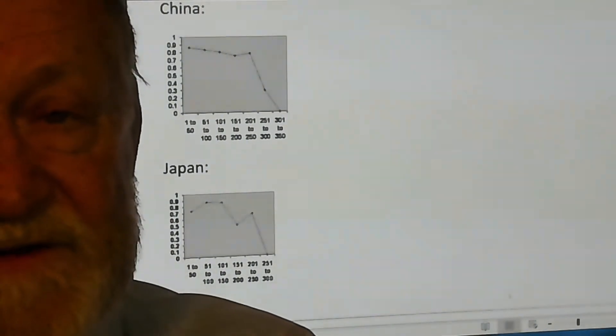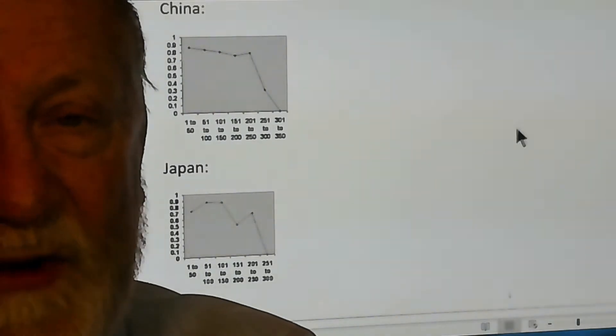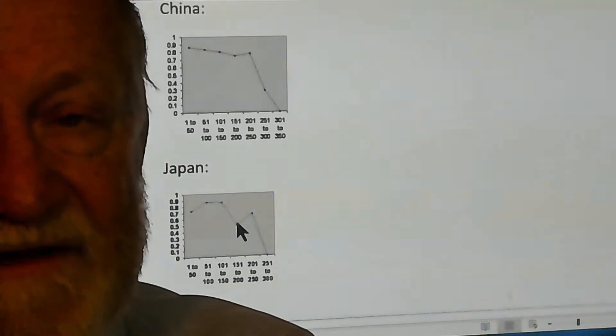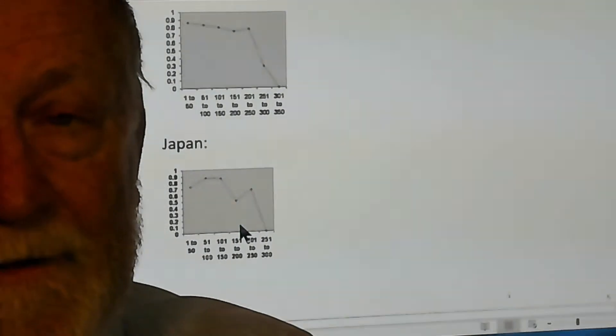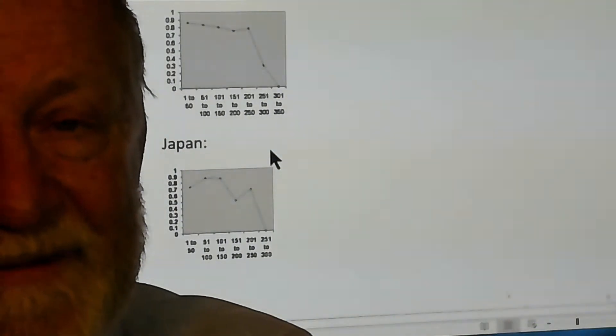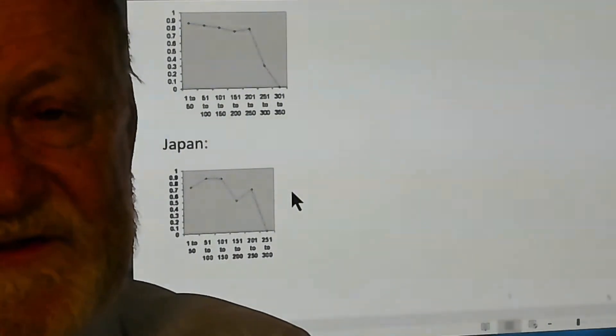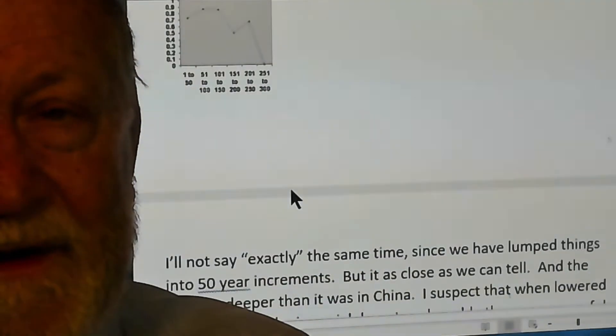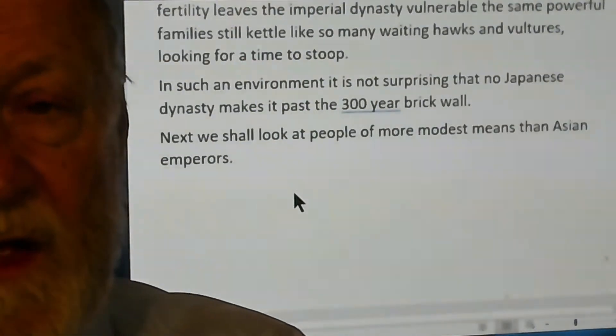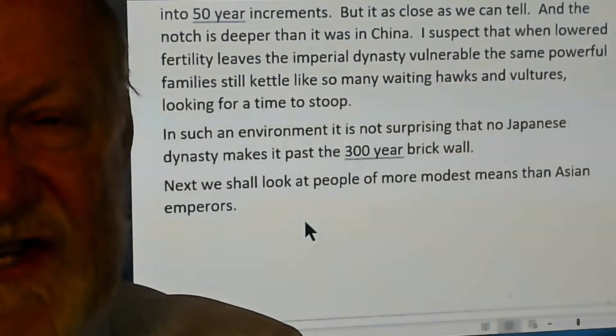China is like Japan except for the evidence that it just is not quite as stable. There's evidence for the old families. One Chinese dynasty may have made it past 300 years—that's not a big number. Emperors of Asia.